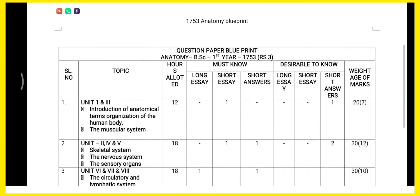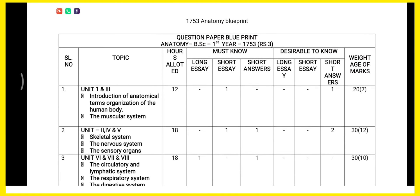So what is the problem you will face? The blueprint layout has two columns — must know and desirable to know. What can happen during the annual examination is that if the blueprint shows a 5-mark question, they may ask it for 2 marks, or a 2-mark question may be asked for 5 marks. This mistake often happens.